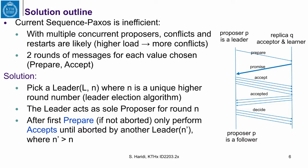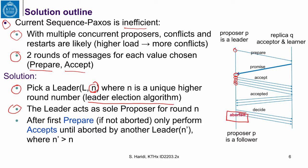Here is an outline of the solution. The current sequence Paxos is inefficient with multiple concurrent proposals — conflicts and restarts are likely, with two rounds of messages for each value chosen: one round for prepare and the next for accept. The solution: we pick a leader with a unique higher round number, done by the leader election algorithm. The leader acts as sole proposer for round N. We do a prepare, get a majority of promises from acceptors, and after this prepare, if the leader is not aborted, it performs only accepts — one per new command, extending its sequence — until it is aborted by a new leader with a higher round number.